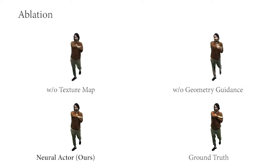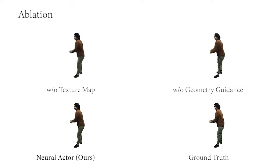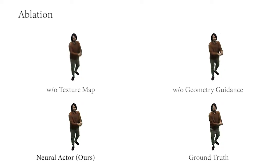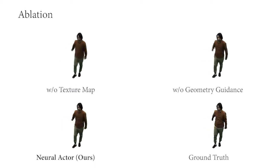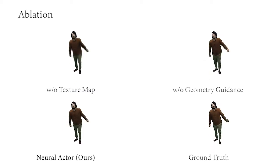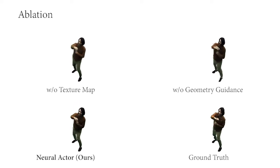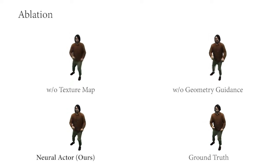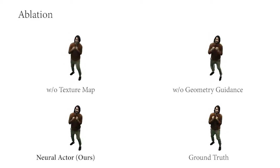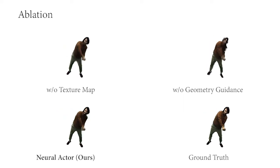Here we show an ablation result. We compare our full model to variants without the texture map and without geometry guidance. Without the texture map as input, the result is blurry. Directly learning full deformations without the SMPL geometry as guidance is difficult and leads to distortion artifacts. In contrast, our proposed design choice offers the best accuracy and captures high-fidelity details such as cloth wrinkles.